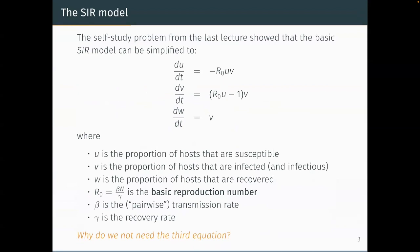At the end of the last lecture there was a self-study problem on non-dimensionalizing the SIR model. We had dS/dt, dI/dt, and dR/dt. The problem took you through parameter and variable substitutions: rescaling time according to the average infectious period, and rescaling susceptible, infected, and recovered as u, v, and w. So u is the proportion of hosts that are susceptible, v is the proportion infected and infectious, and w is the proportion recovered.